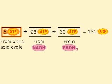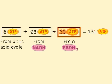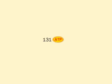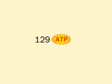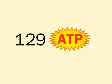So the final yield: 8 plus 93 plus 30 equals 131. Even when we take away two ATPs needed to activate the palmitate to palmitoyl-CoA at the beginning, there are still 129 ATPs left. Remember that these numbers are approximate.